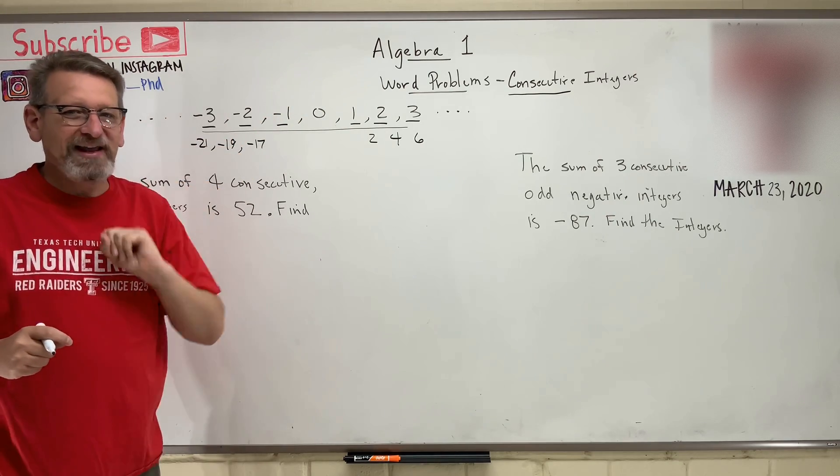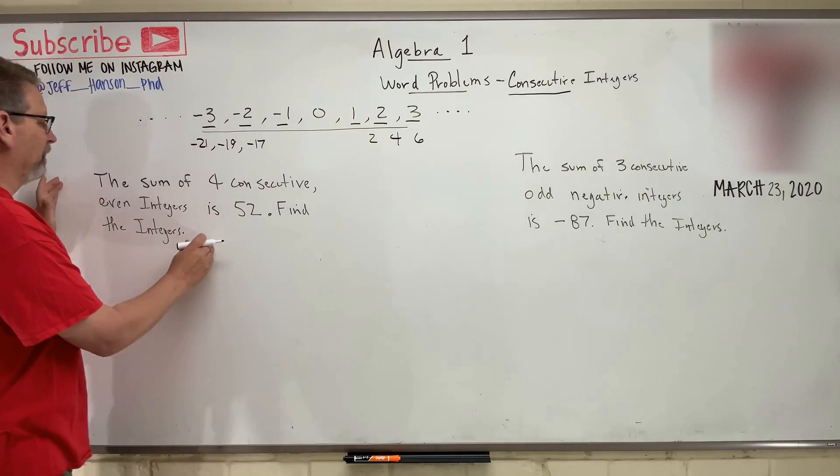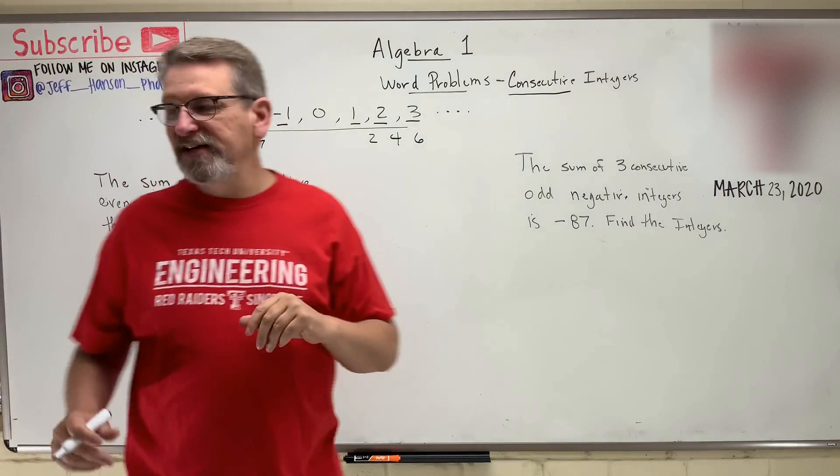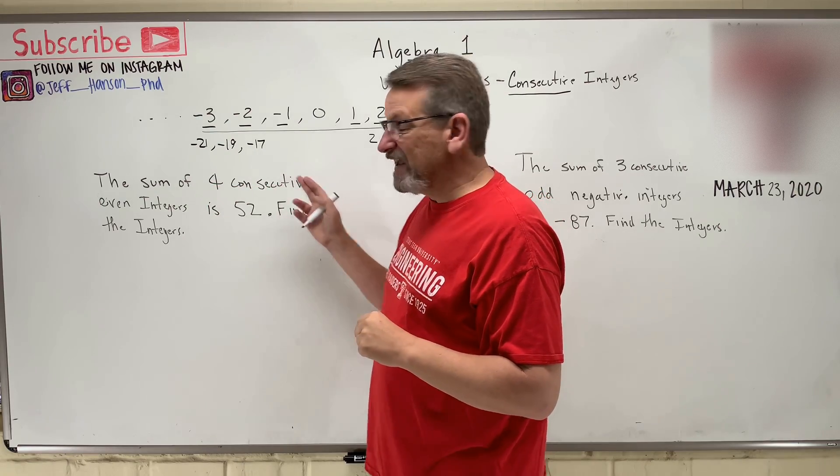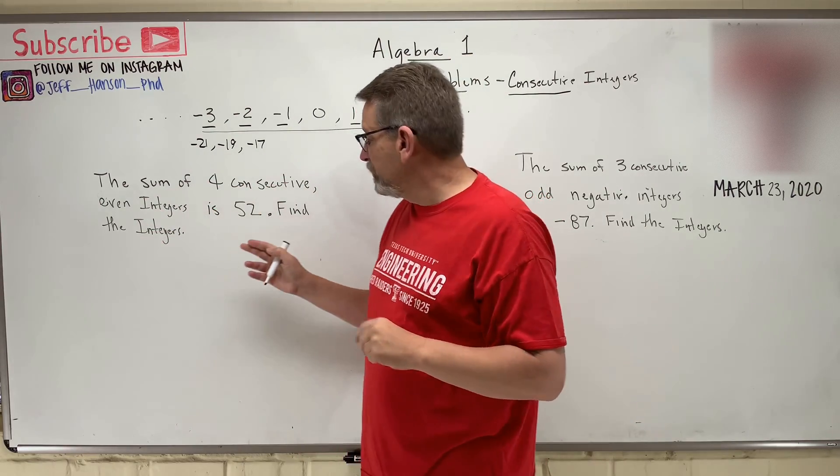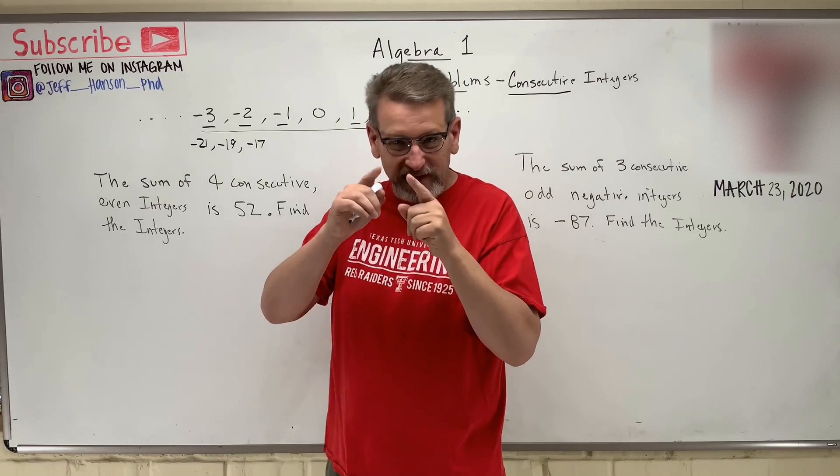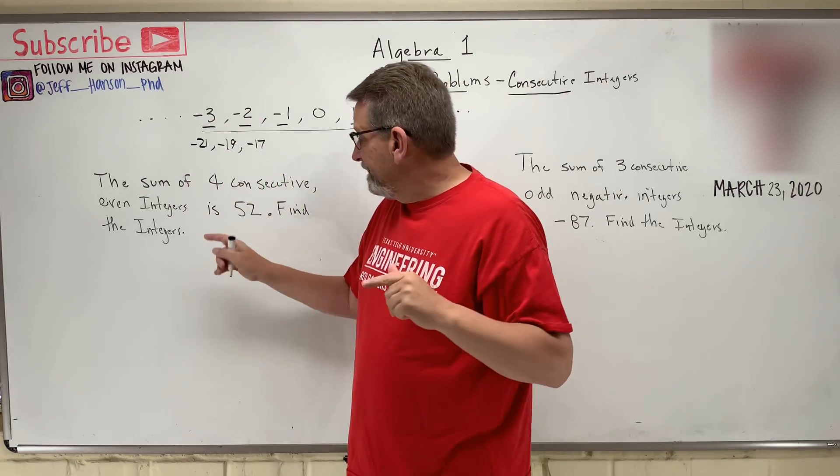They are quite easy, actually. Okay, let's look at a problem. This problem here says, find the sum of four consecutive even integers, okay? So we know that they're not just in a row, but they're the evens, the two, the four, the six, is 52.